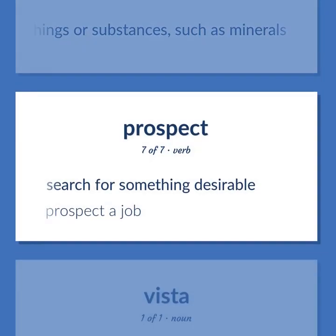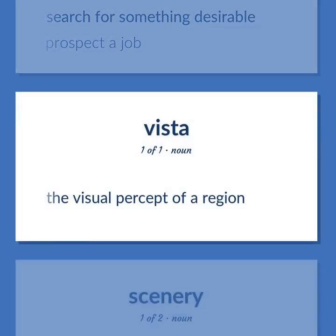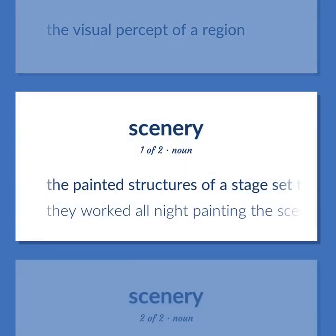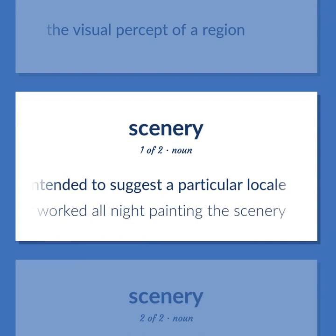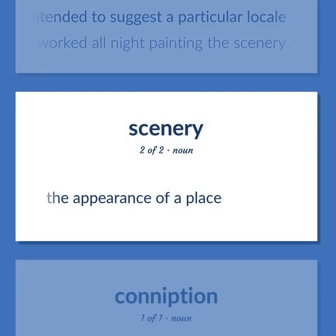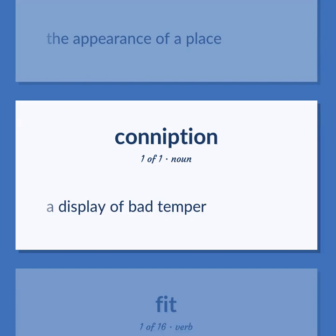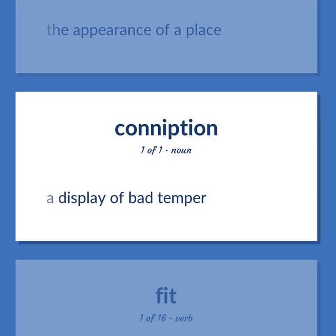Prospect: Search for something desirable — prospect a job. The visual percept of a region. The painted structures of a stage set that are intended to suggest a particular locale. They worked all night painting the scenery. The appearance of a place. A display of bad temper.